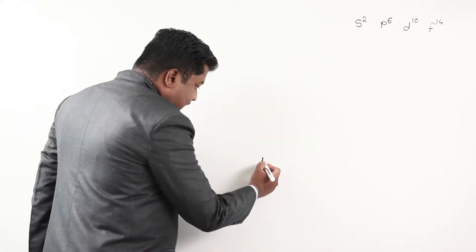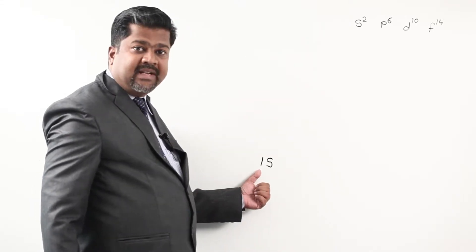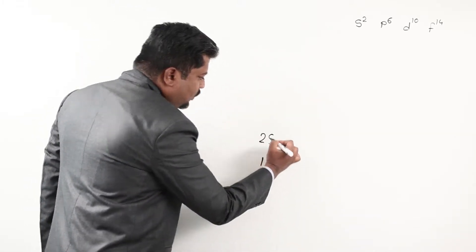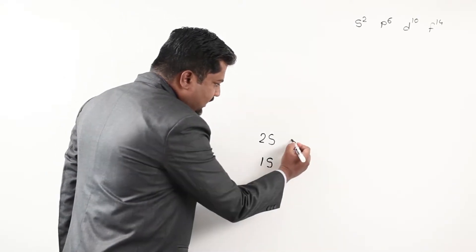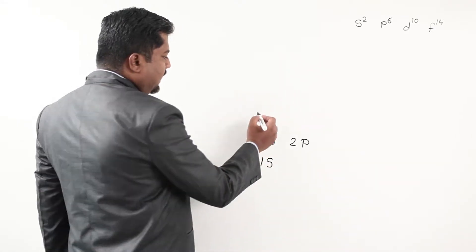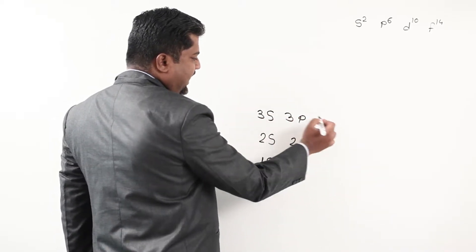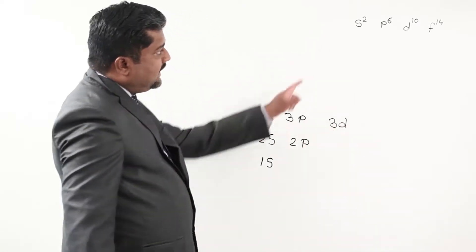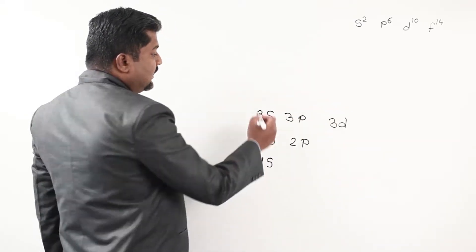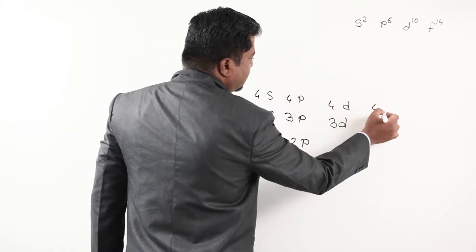Starting from the bottom: I write 1S, then above it 2S, and next to that 2P. Numbers increase going up. Then 3S, 3P, 3D. As shells get higher, we add one more subshell. So: 4S, 4P, 4D, 4F. Then 5S, 5P, 5D, 5F. Then 6S, 6P, 6D, 6F.